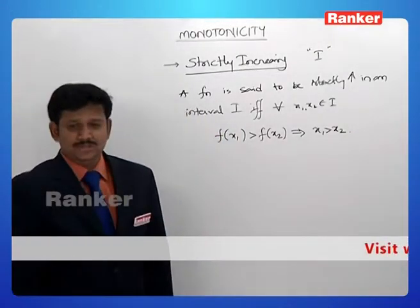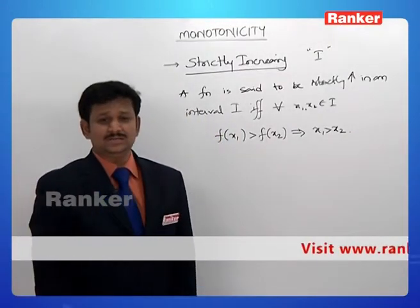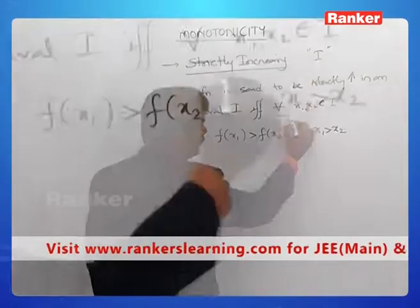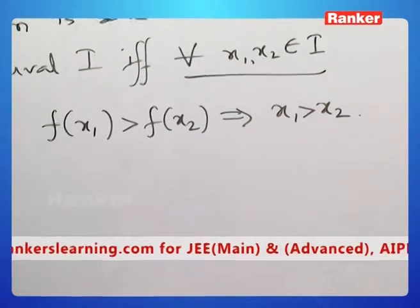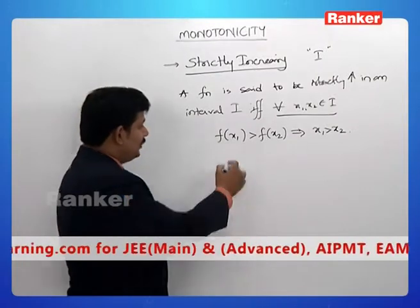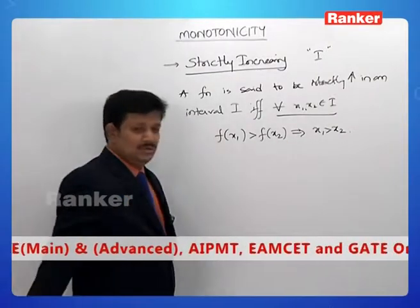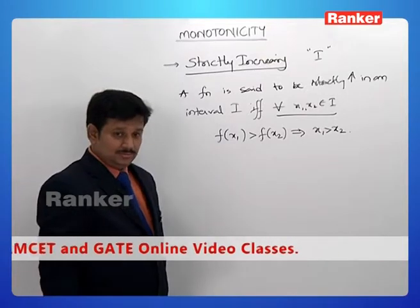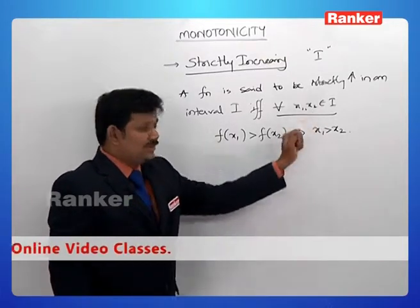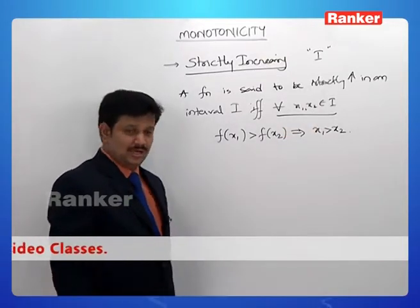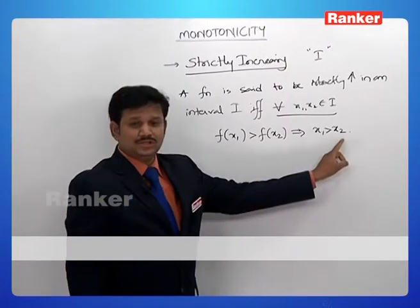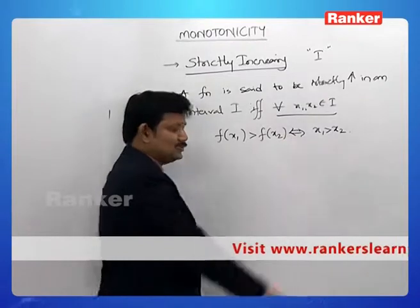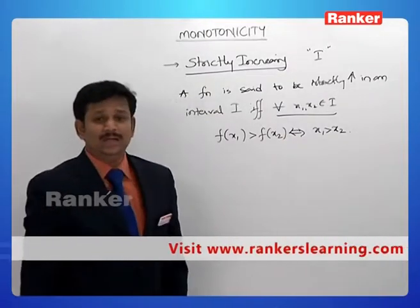A function f(x) is said to be strictly increasing in an interval i if and only if for all x1, x2 belonging to i: f(x1) greater than f(x2) should imply x1 greater than x2, and also for any two numbers x1 and x2 belonging to i, x1 greater than x2 should imply f(x1) greater than f(x2). So this is a bi-implication.